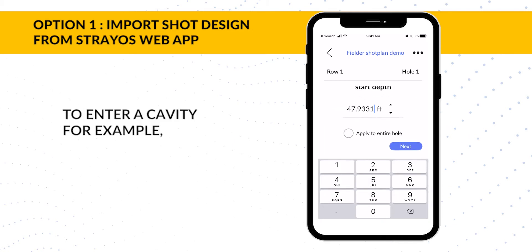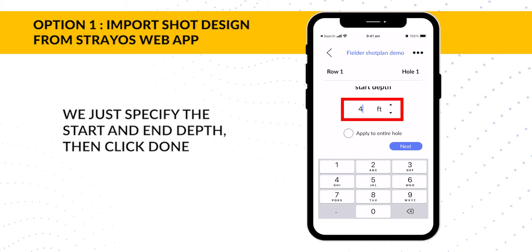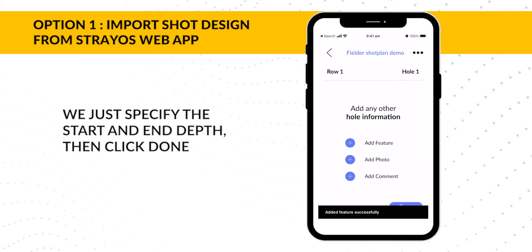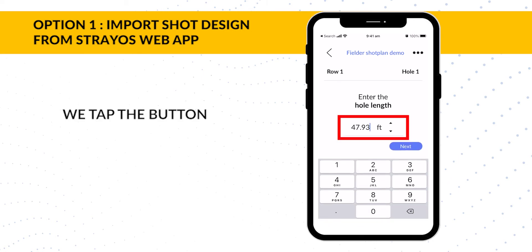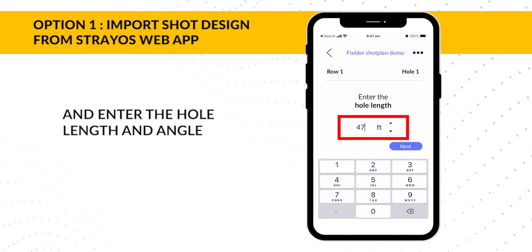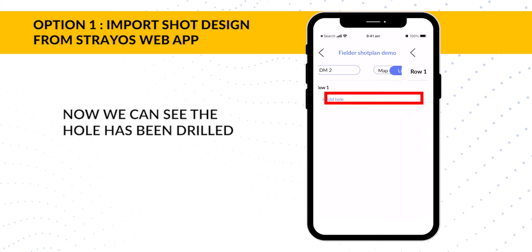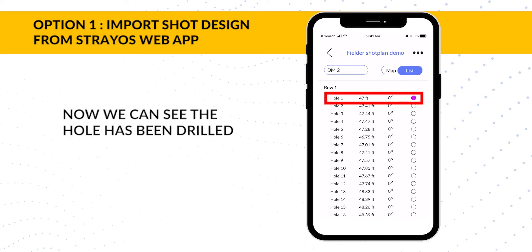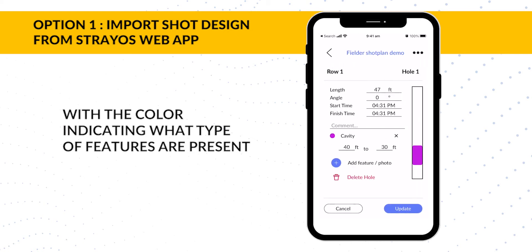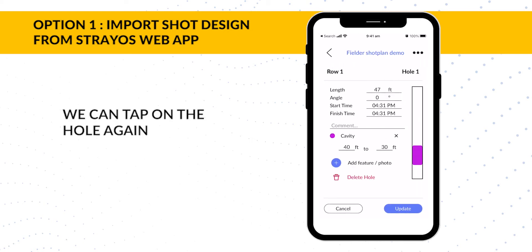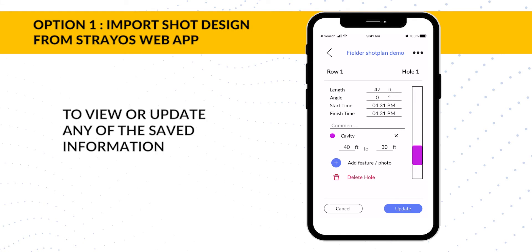To enter a cavity, for example, we just specify the Start and End Depth, then click Done. Once we've finished drilling, we tap the button and enter the hole length and angle. Now we can see that the hole has been drilled with the colour indicating what types of features are present. We can tap the hole again to view or update any of the saved information.